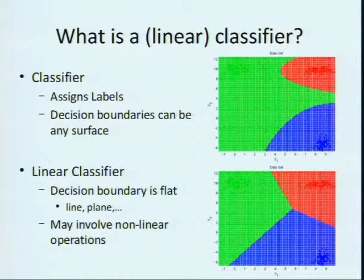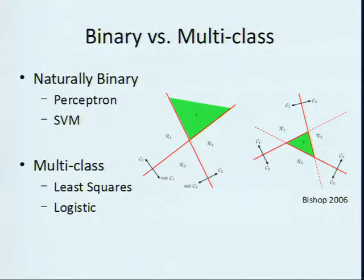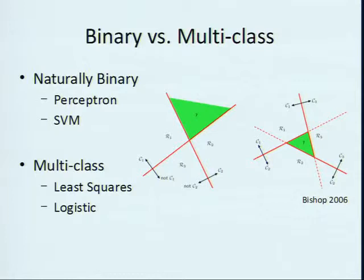In this presentation, I'm only going to be demonstrating linear classifiers. The classifier you use really depends on the application — there's no single best classifier. One of the considerations is how many classes you need to distinguish between. Some classifiers are naturally designed for binary classification, like the perceptron or support vector machines. These classifiers can divide input space into two regions only. There are ways to combine binary classifiers to form multi-class classifiers.